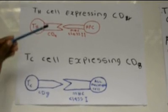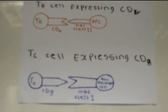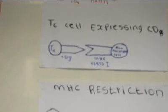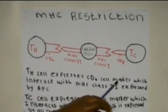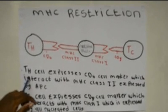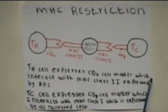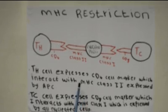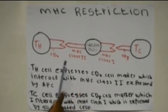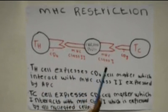If I combine these, there should be three cells and four cell markers. TH expresses CD4 cell marker, which interacts with MHC class 2 restriction expressed by APC.